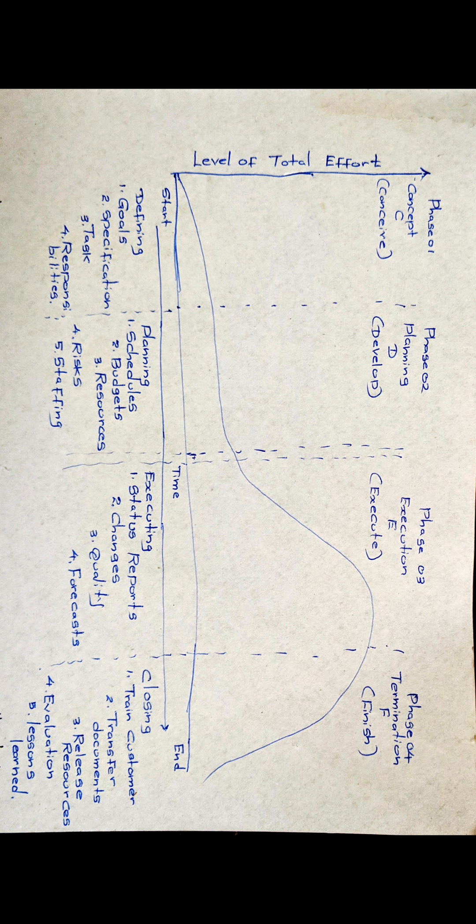In the execution phase, that is phase three, you need to generate status reports. If there are any changes, you need to work on them. You need to work on the quality, how things are going, and forecast what would be needed for the project.